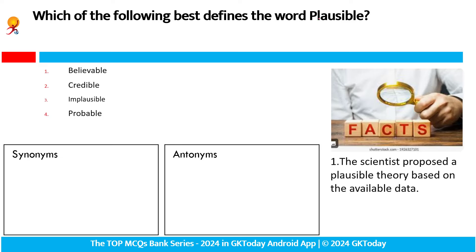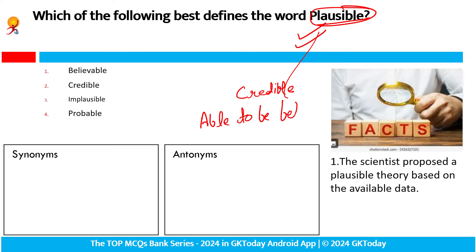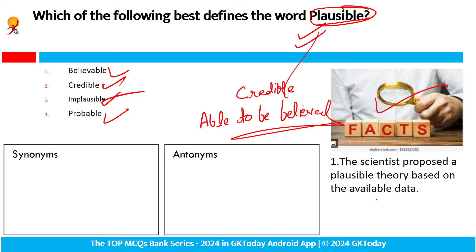Which of the following best defines the word 'plausible'? It's not a new word — we have covered it many times. Kya hota hai? Possible, credible — able to be believed. Isko easily believe kiya ja sakta hai — fact-based pe. So believable, credible, probable — iske synonyms. Jabke impossible iske antonym hai — which cannot be believed. Reasonable bhi iska synonym hai. The scientist proposed a plausible theory based on the available data — available data ki based par scientist ne a plausible yani credible theory propose kari.